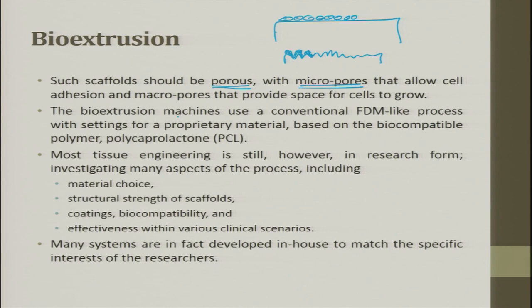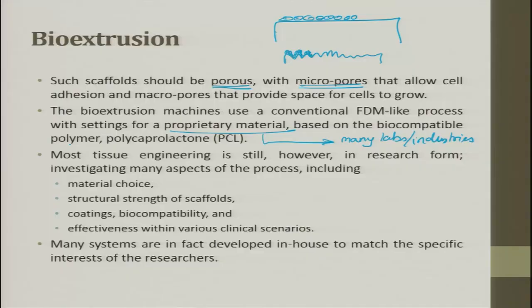Bio extrusion machines use a conventional FDM-like process with settings for a preparatory material — this is a challenge that many labs and industries are working on. It is completely preparatory. You can use light, free atmosphere, or oxidation to solidify the material. Many materials are being integrated based on biocompatible polymers; PCL (polycaprolactone) is a commonly used material. Most tissue engineering is still in the research stage.